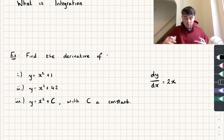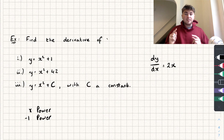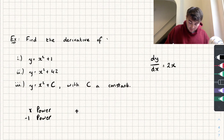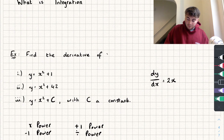When we take a derivative, we multiply by the power and then subtract one from the power. Now remember, integration is the inverse or opposite of this, so when we integrate we're going to be adding one to the power and then dividing by the new power.